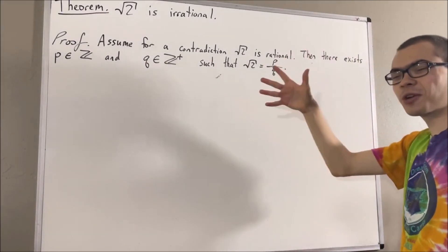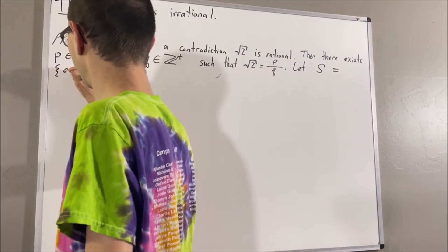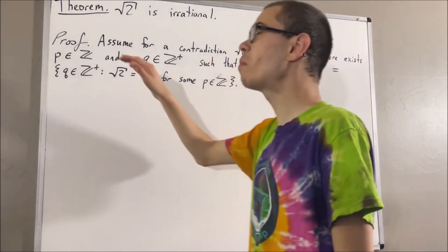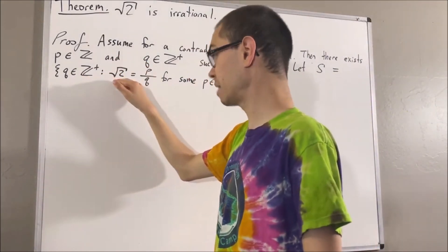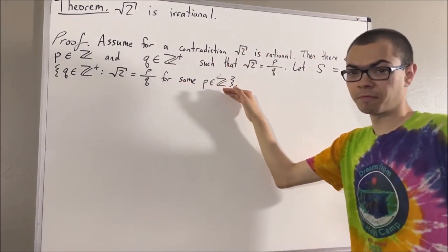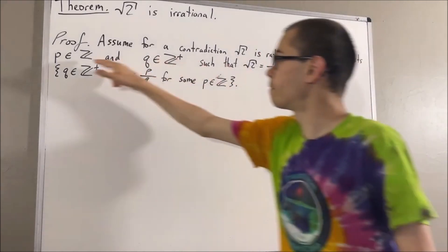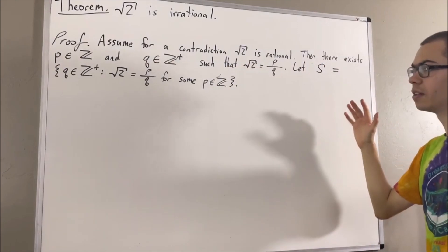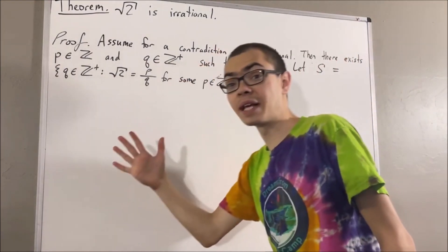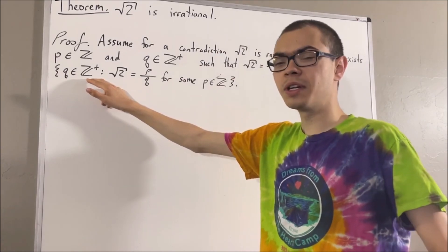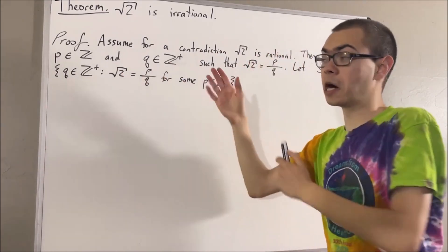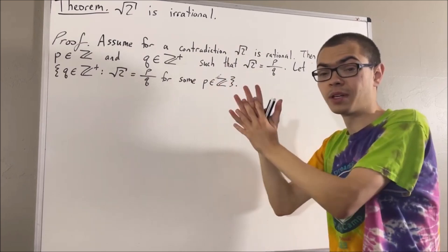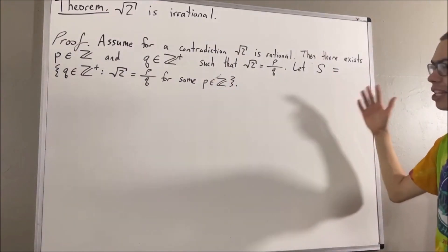On that note, we consider the following set. We let S be the set of all positive integers q such that the square root of two is equal to p over q for some integer p. Based on what we have here, our set S is non-empty. So S is a non-empty subset of the positive integers. Now, it turns out every non-empty subset of the positive integers has a smallest element, and this is what we call the well-ordering principle. So we'll let t be the smallest element of S.